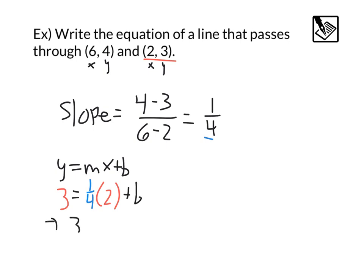Solving from there, we'll get 3 equals 1 fourth times 2 is 2 fourths, or 1 half, plus b. And if we subtract 1 half from both sides, we're going to end up getting 5 halves equals our y intercept. Perfect.